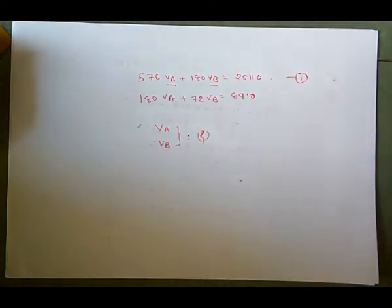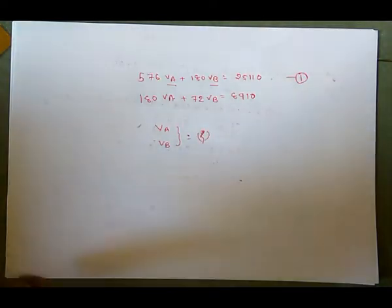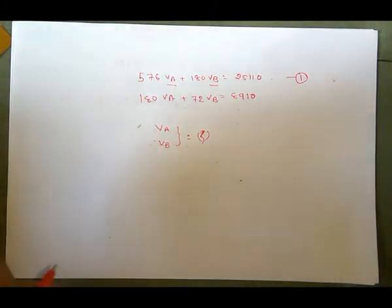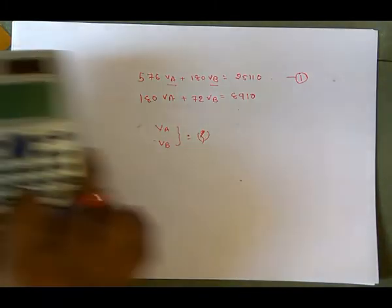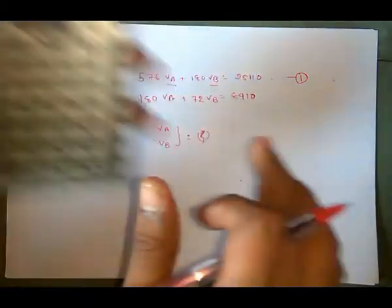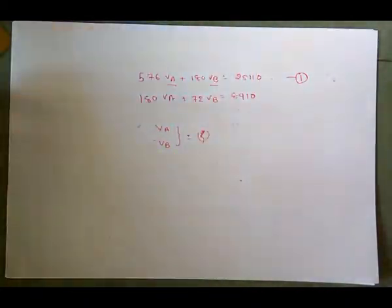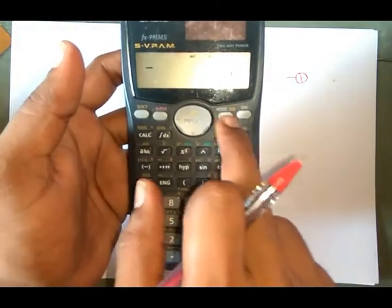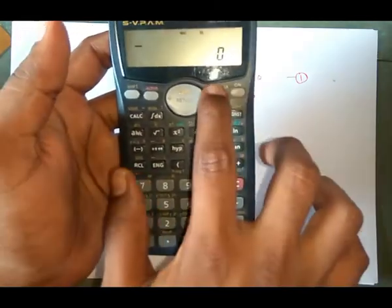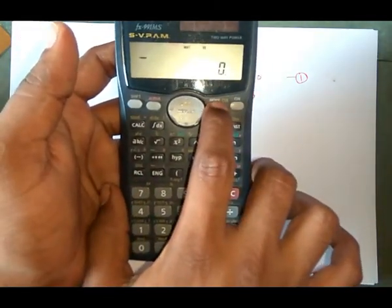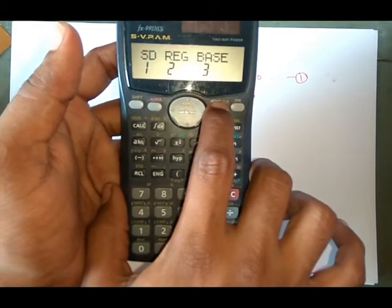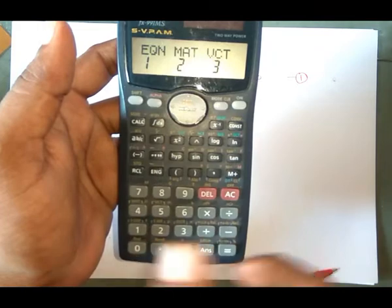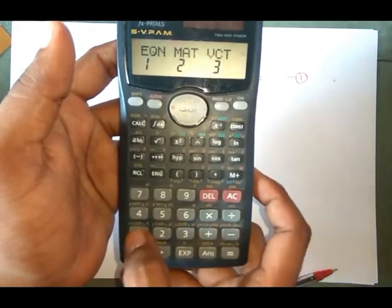We can use either the 991ms or the 991es. I'm going to solve it first with the 991ms calculator. First, check the equation mode is available — press Mode three times. On the third press, the first option is Equation, so press it.